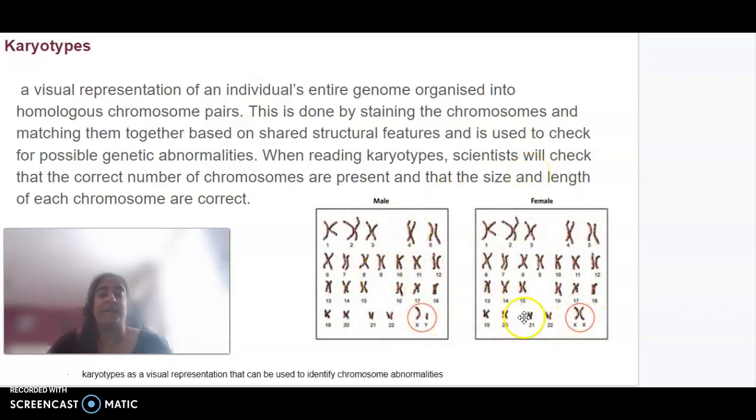If there's an extra chromosome 21, we could identify that the individual may have Down syndrome. Karyotypes can be used for chromosomal abnormalities to highlight some of those as well.